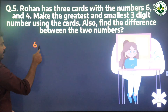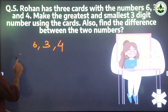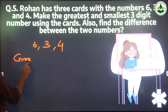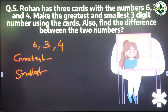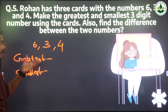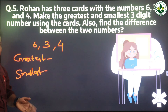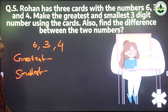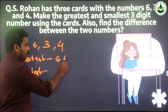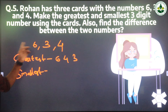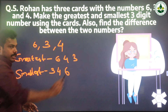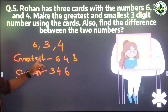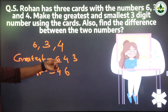There are 3 digits: 6, 3, and 4. We need to make the greatest and the smallest number. For the greatest number, write the digits in descending order: 6, 4, 3 — that is 643. For the smallest number, write the digits in ascending order: 3, 4, 6 — that is 346. So the numbers are 643 and 346.